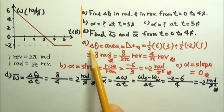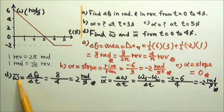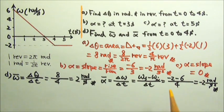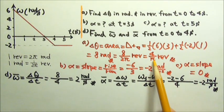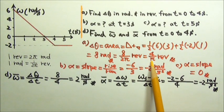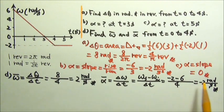The angular displacement, angular acceleration, and angular velocity are all vectors, so their signs tell us about direction. If we say positive is counterclockwise, then the displacement is counterclockwise, and the negative angular acceleration would be clockwise.